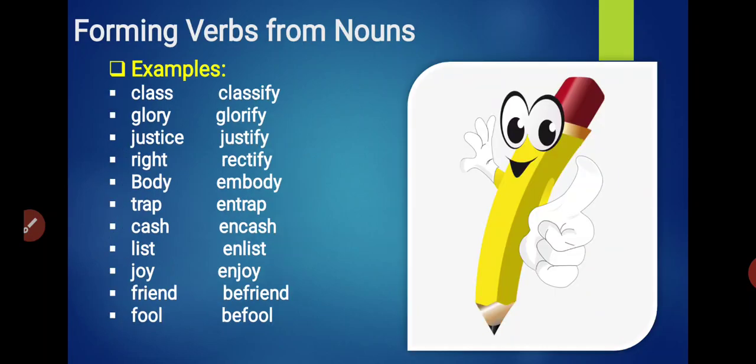Next, we form verbs from nouns. Now we will make verbs from nouns. Class becomes Classify. Glory becomes Glorify. Justice becomes Justify. Right becomes Rectify. Body becomes Embody. Trap becomes Entrap. Cash becomes Encash. List becomes Enlist. Joy becomes Enjoy. Friend becomes Befriend. Fool becomes Befool. So it's very easy. With the help of prefixes and suffixes, we can change parts of speech.